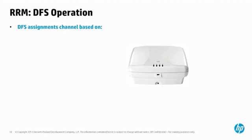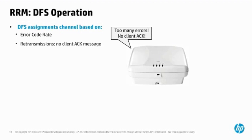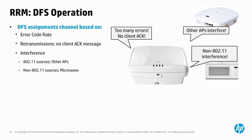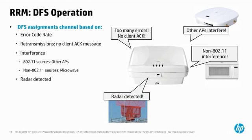DFS bases its channel selection decisions in real time on the following criteria: Error Code Rate, which covers physical layer errors such as cyclic redundancy check (CRC) errors; retransmissions, where the AP must retransmit frames if it does not receive an ACK message from the recipient; and interference, which can include 802.11 sources such as other APs, and non-802.11 sources such as Bluetooth devices and microwave ovens. Finally, if any radar signal is detected on a working channel, the AC is notified immediately and a channel change will take place.